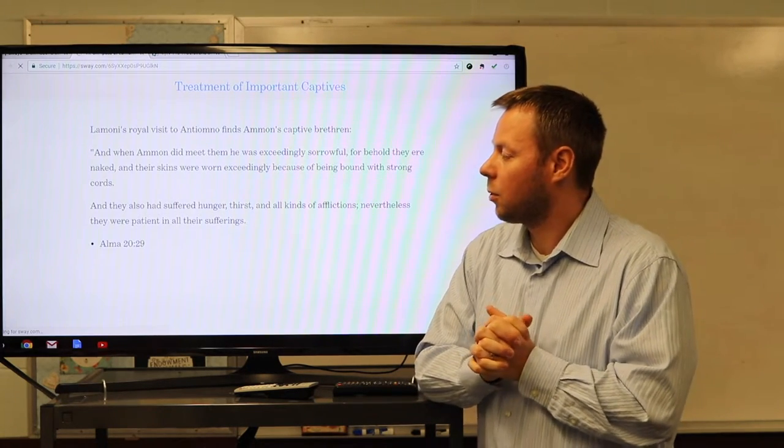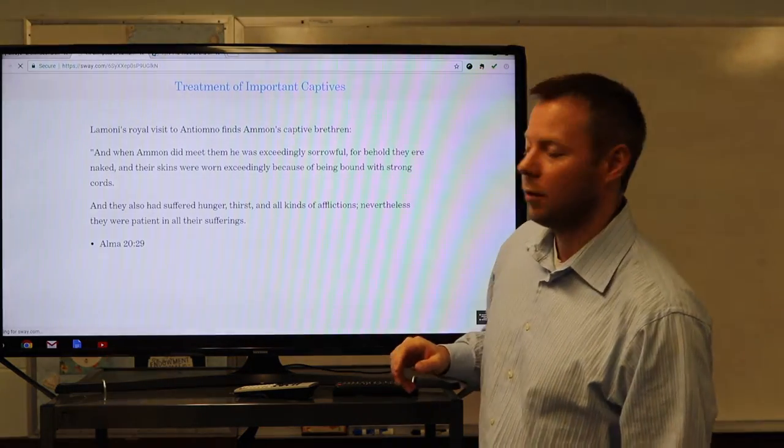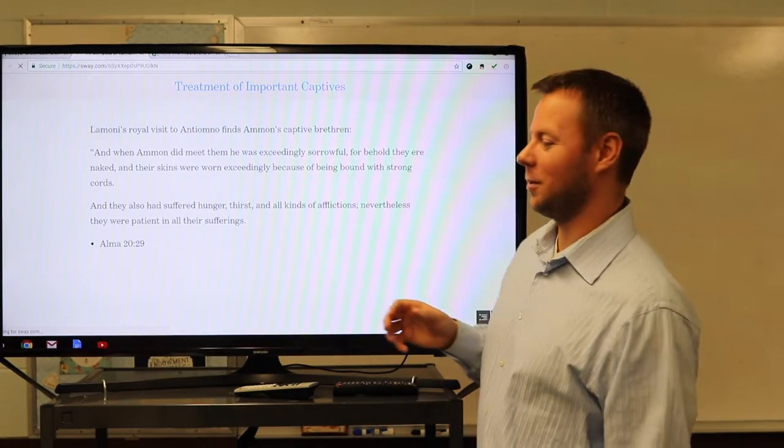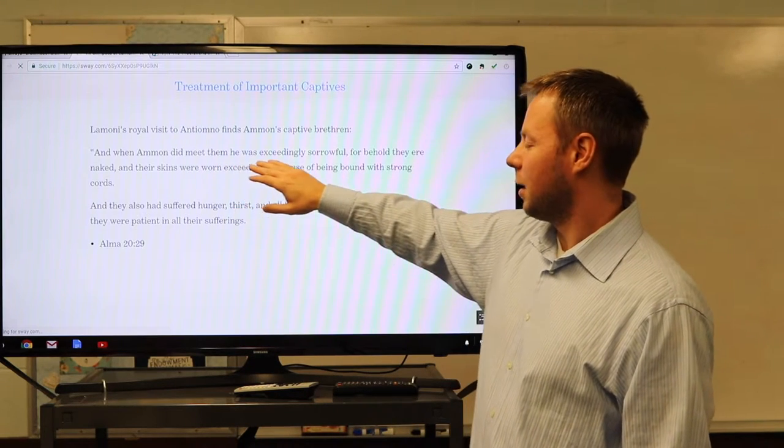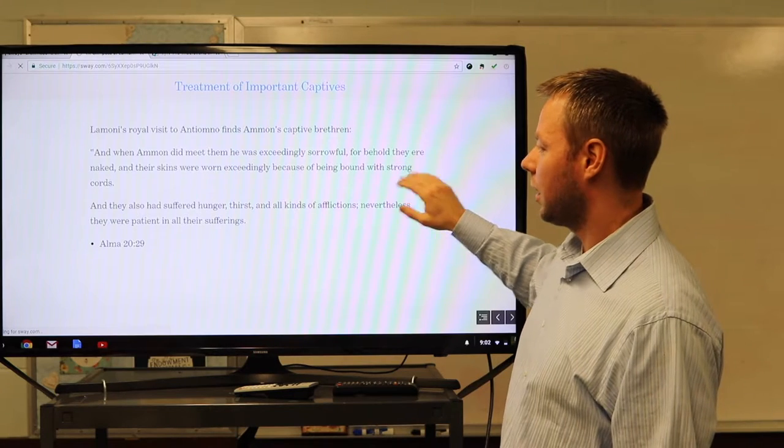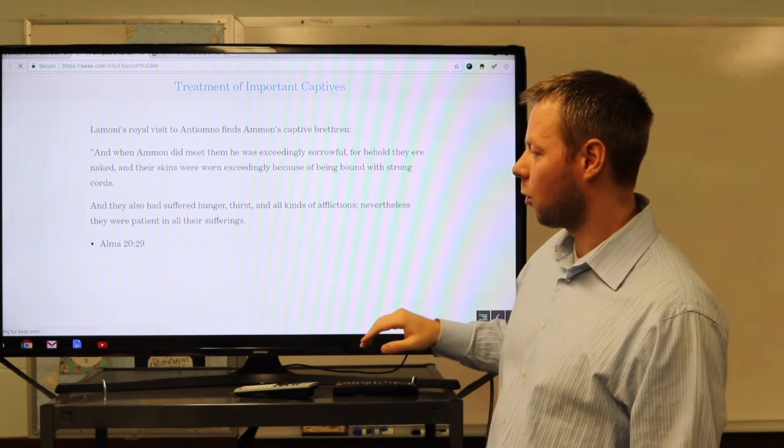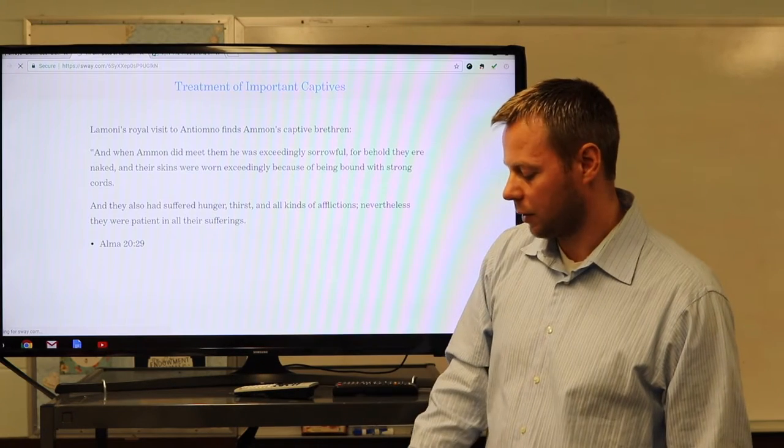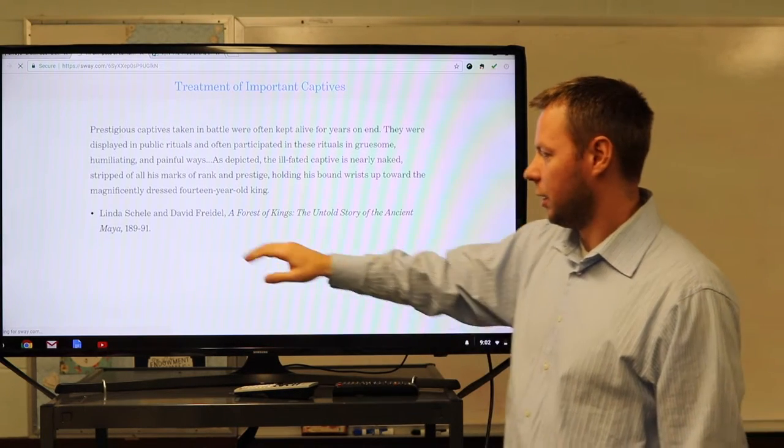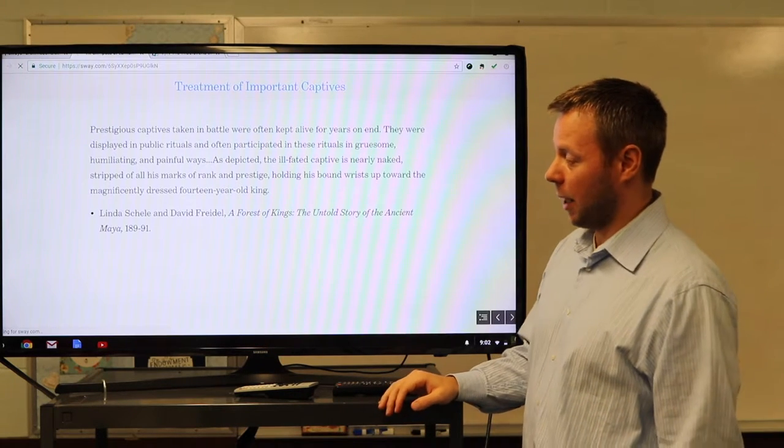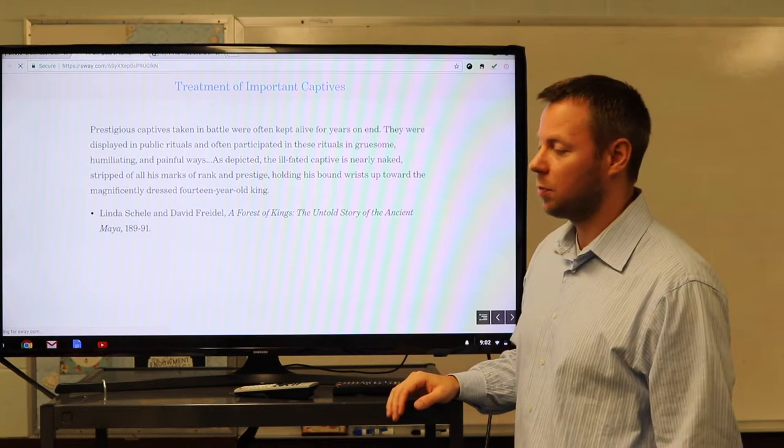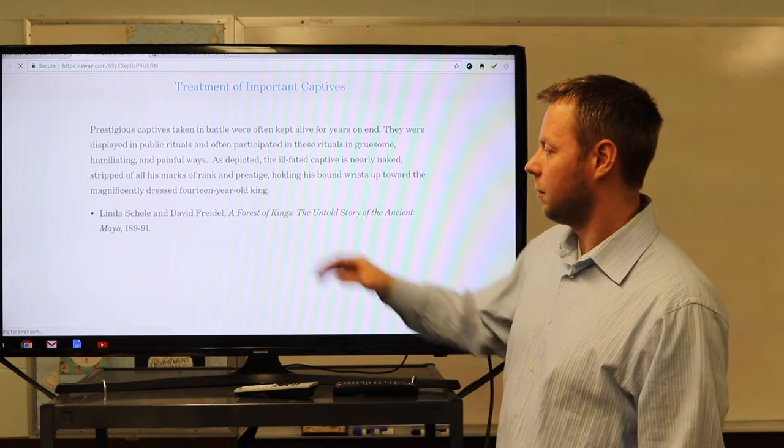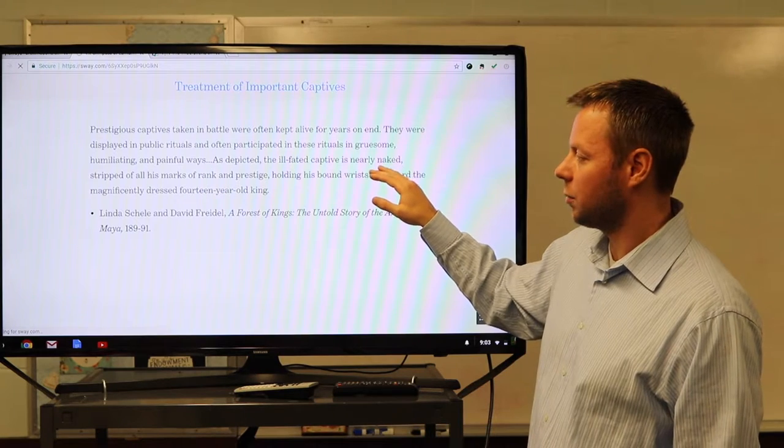All right, so treatment of important captives. Lamoni's royal visit to Antiomno finds Ammon's captive brethren, right? They get a far worse reception than Ammon, right? Ammon, like, Lamoni's like, first, you can marry my daughter and then, all right, then you can go out and defend me, but when Ammon met with his brethren, he was exceedingly sorrowful, for behold, they were naked and their skins were worn exceedingly because of being bound with strong cords. They'd also suffered from hunger, thirst, and all kinds of afflictions. Nevertheless, they were patient in all their sufferings. From, again, Schele and David Freidel, the prestigious captives taken in battle were often kept alive for years on end. They were displayed in public rituals and often participated in these rituals in gruesome, humiliating, and painful ways.